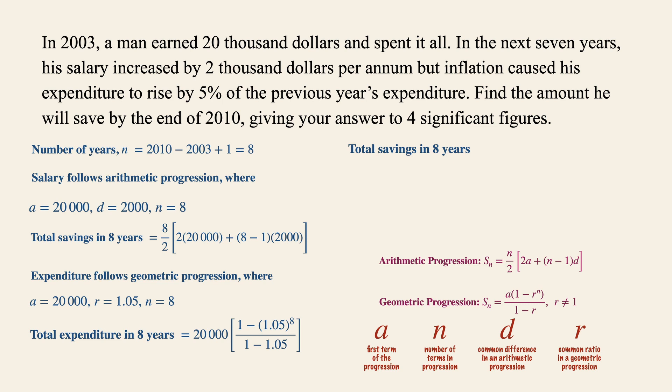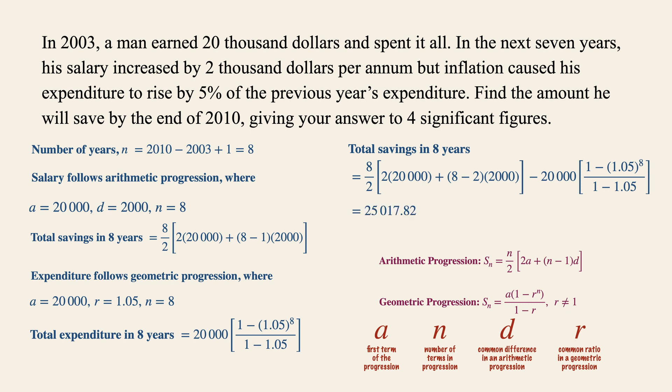The amount saved is simply the total salary minus the total expenditure. Using your graphing calculator, this gives 25,017.82. Don't stop here — we need to round off to four significant figures, which gives us $25,020. So this is the amount that the man saved between 2003 to 2010.